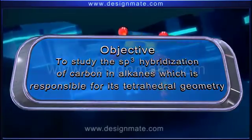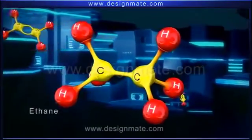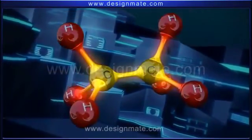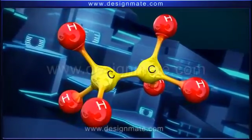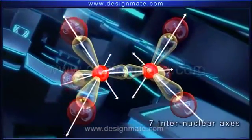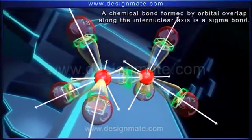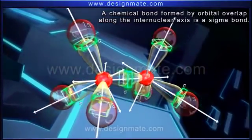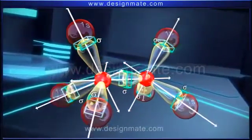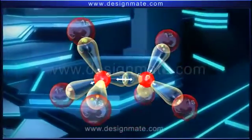We will study the sp3 hybridization of carbon in alkanes and how it is responsible for its tetrahedral geometry, using ethane as an example. There are two carbon atoms and six hydrogen atoms joined by single bonds in this molecule. The orbital picture of ethane shows seven internuclear axes between them. A chemical bond formed by orbital overlap along the internuclear axis is a sigma bond, so both carbon atoms are surrounded by three carbon-hydrogen sigma bonds and one carbon-carbon sigma bond.